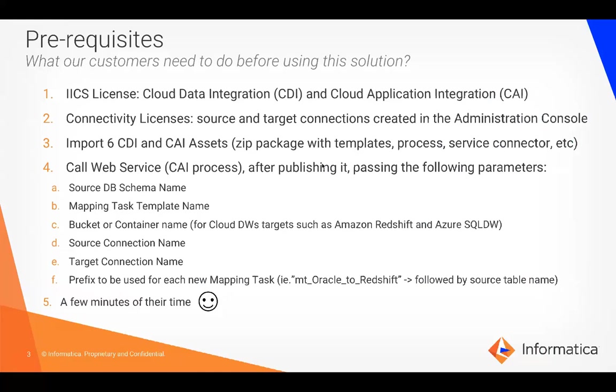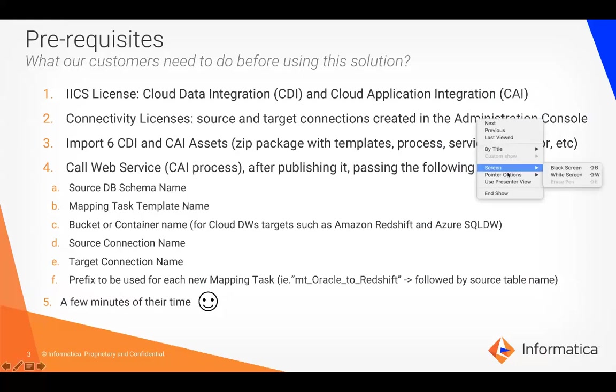The first parameter is the source DB schema name, which usually matches the source connection name. Then the mapping task template name — that is a fixed name, but you're most welcome to edit that. You're also going to pass the bucket or container name for cloud data warehouse targets, such as Amazon Redshift and Azure SQL Data Warehouse, and then the source connection name created in the administration console.